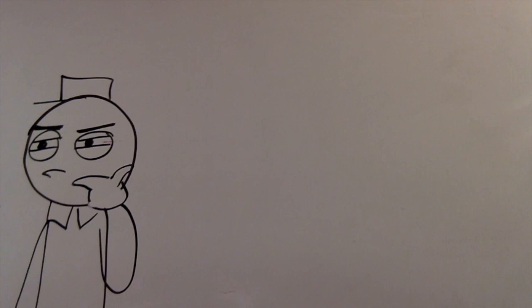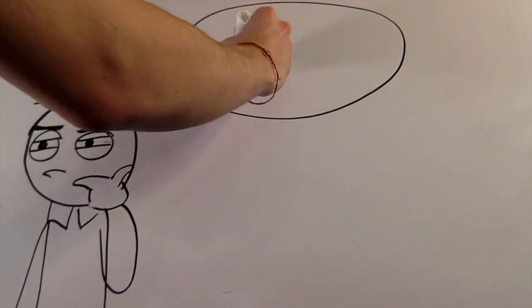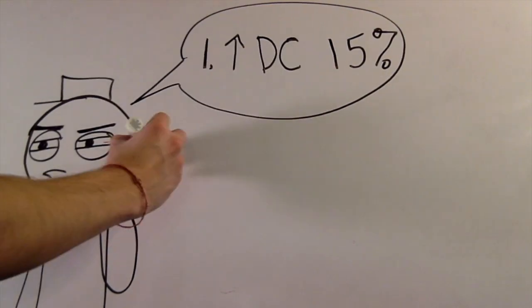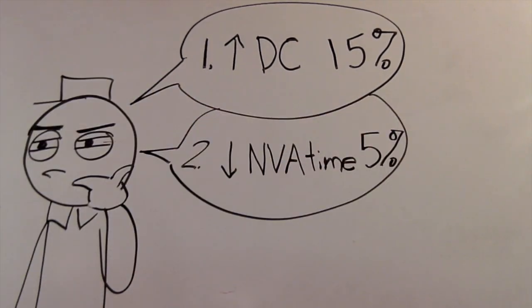Poncho knew he had to fix these issues, so he set three ambitious goals for his burrito production. One, increase design capacity by 15% to help cope with peak demand. Two, reduce non-value added time by 5% to help shorten waiting times. And three, eliminate stockout delays by 100%.